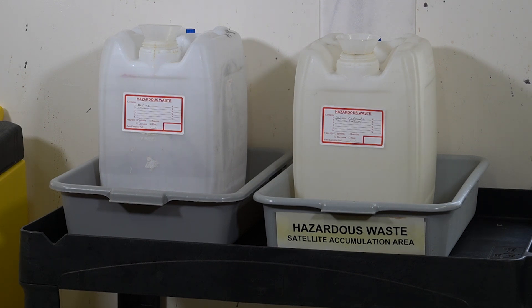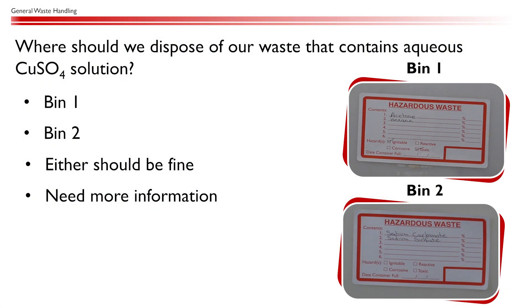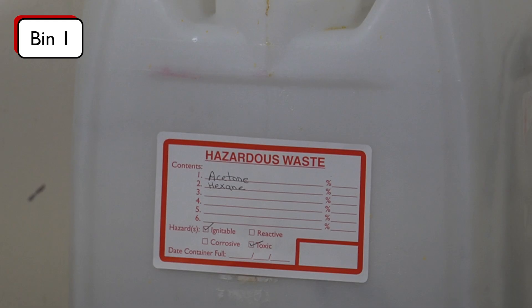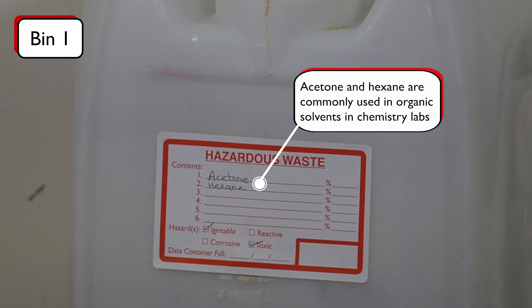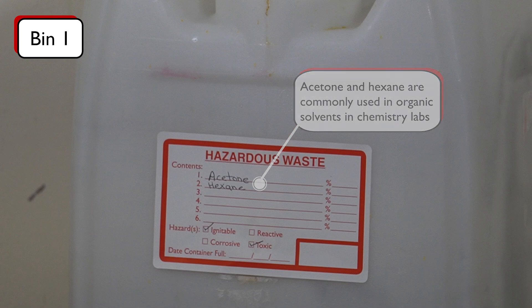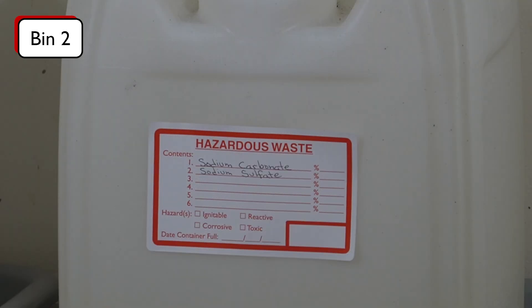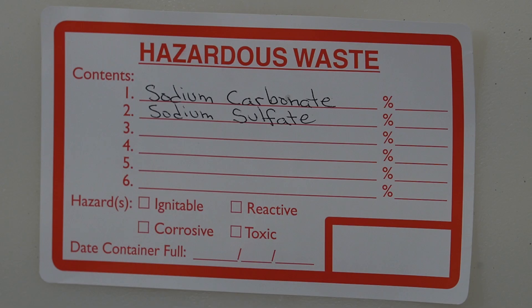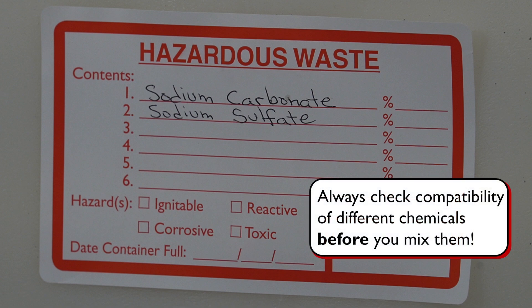This is especially important when an experiment involves multiple waste streams. Where should we dispose of our waste that contains aqueous copper sulfate solution? The label on bin 1 suggests it's for organic wastes, including acetone and hexane, so we definitely should not put our aqueous copper sulfate waste in bin 1. The label on bin 2 says that it is for aqueous waste that contains sodium carbonate and sodium sulfate. If you are new to the field of chemistry and are not sure whether copper(II) sulfate is compatible with sodium carbonate and sodium sulfate, you should ask your instructor for clarification.